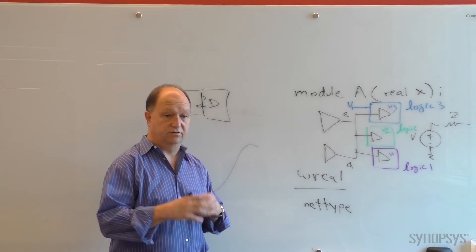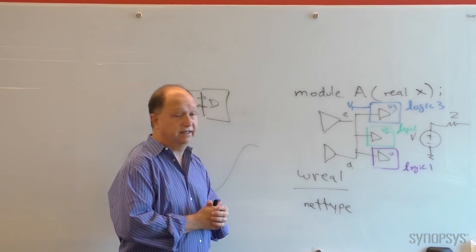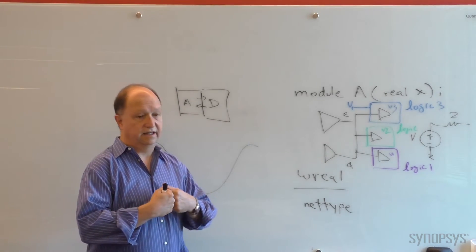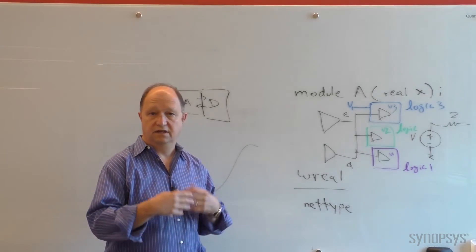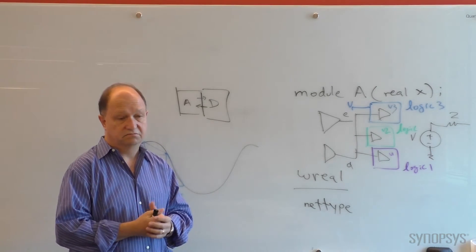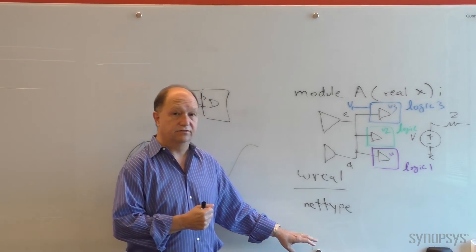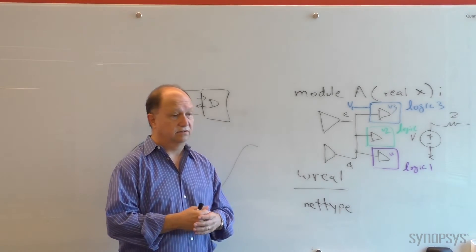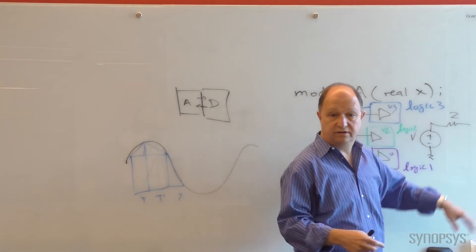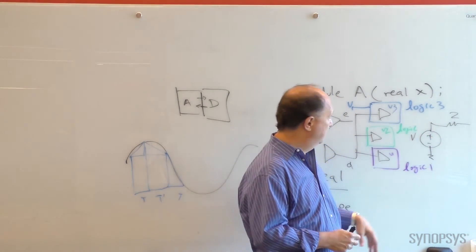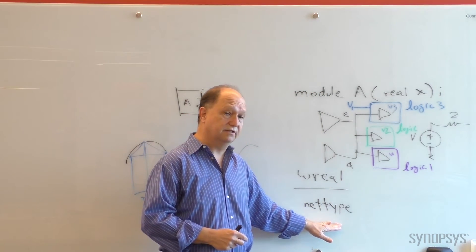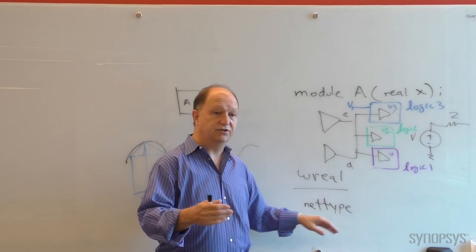What Nettypes allows you to do is to create your own abstraction for a net. It doesn't need to carry a single real number. It can handle anything. It can carry logic, real, array, structs, anything. You can combine into that. It's a new type and it's unbounded. And it also allows you to create your own resolution functions. So the user-defined resolution functions will handle something like a Thevenin or an Norton equivalent. It's easy to do this, but you can do that with a Nettype.